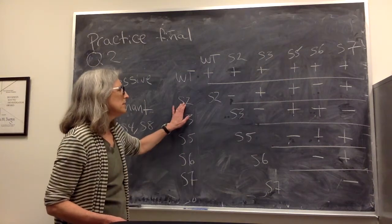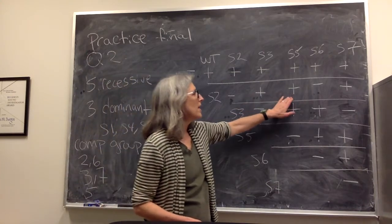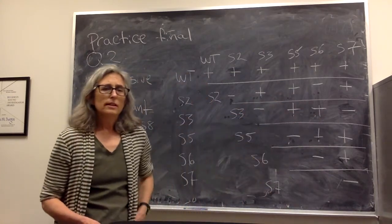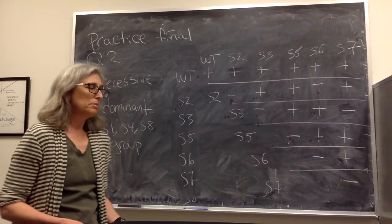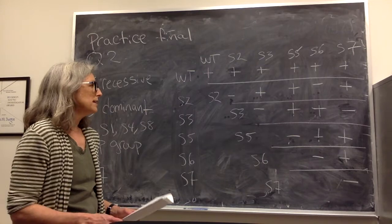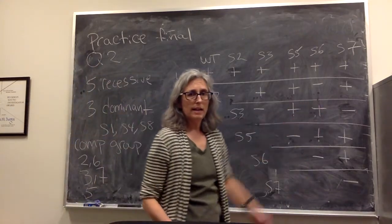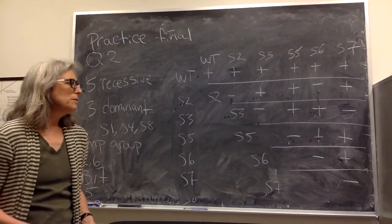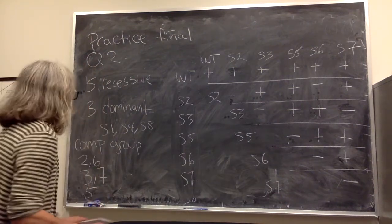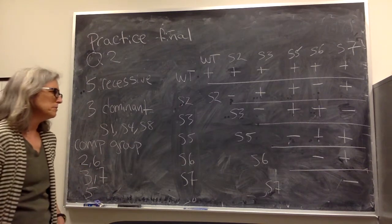So for mutant 2 for example if you cross it to mutant 3 or mutant 5 or mutant 7 you get the wild type phenotype. That means that S2, suppressor 2, is a mutation in a gene that is probably a different gene from mutant 6. Since they fail to complement we would put them in the same complementation group and we'll group 2 and 6 together as being mutations in the same gene.